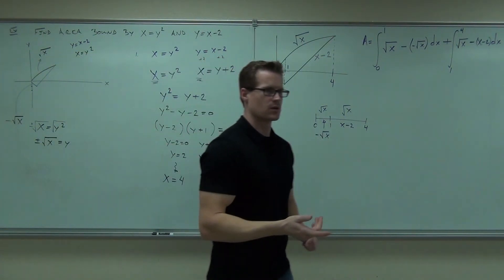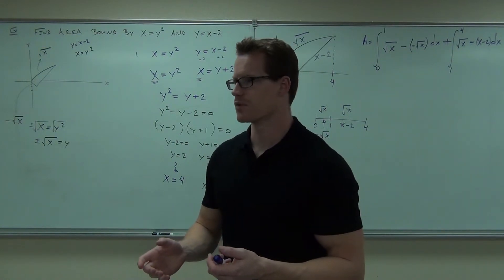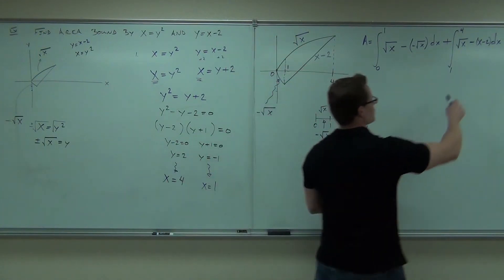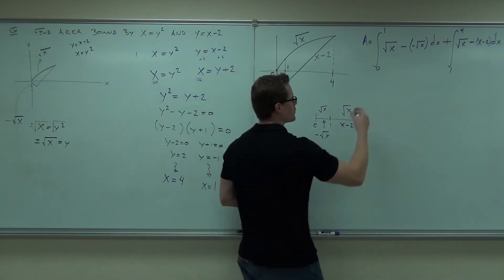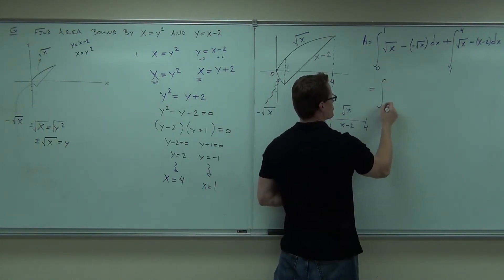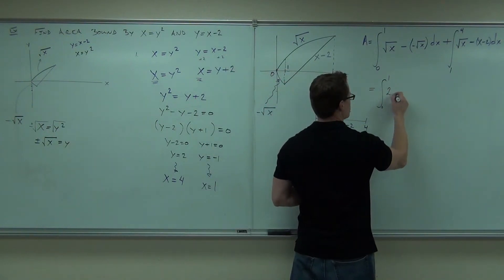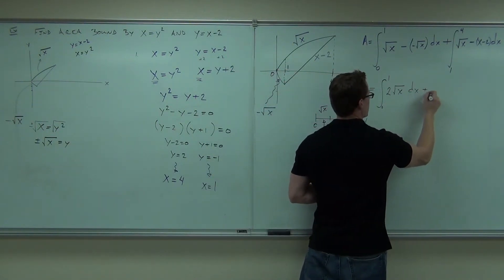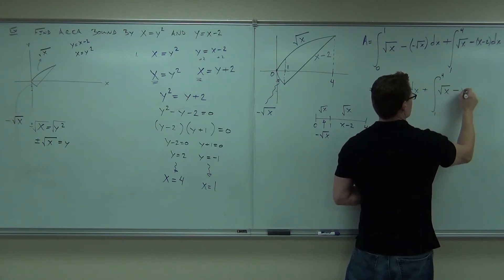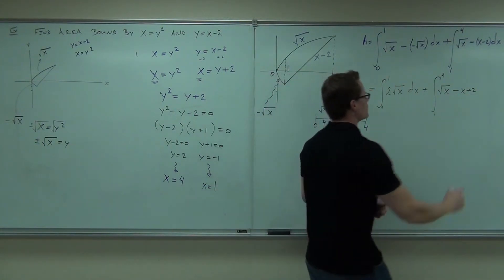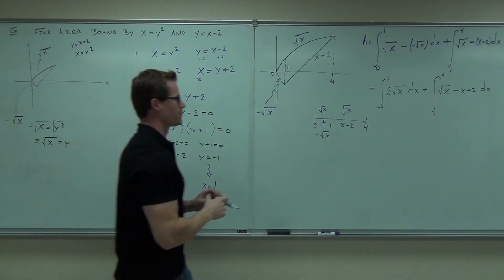Don't start just taking random integrals before you start simplifying and putting things together. You definitely don't want to start dealing with this in all the parentheses until you combine like terms, which you do actually have here. We've got an integral from 0 to 1. We've got a square root of x minus a negative square root of x. How much is that? That makes things easier already. 2 root x. Plus, another integral from 1 to 4. Square root of x minus x plus 2. You see where the plus 2 is coming from?